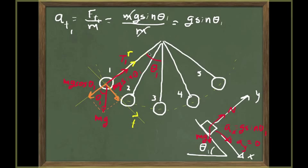The key difference between the pendulum and the incline is that for the incline the perpendicular acceleration is zero at all times. For the pendulum, the radial acceleration is not always zero. Only at point 1 is the radial acceleration actually zero, because the velocity at that point is zero — point 1 is when we release the pendulum. So the radial acceleration, given by V²/R, is zero there.